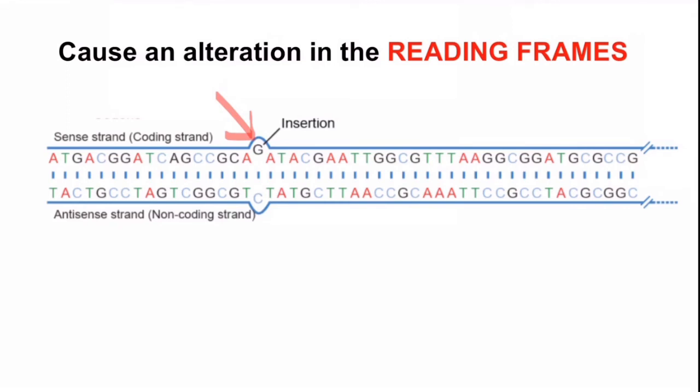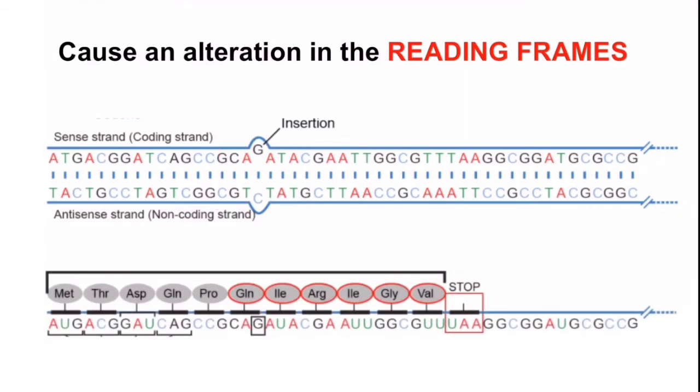So, previous reading frame, the codon was GCA, ATA, but now it will be changed. It will be GAT, then ACG, then AAT. Now due to alteration of this frame, the codons from the point of mutation are coding for different amino acids. So the product of gene will be completely different. This is known as frameshift mutation.